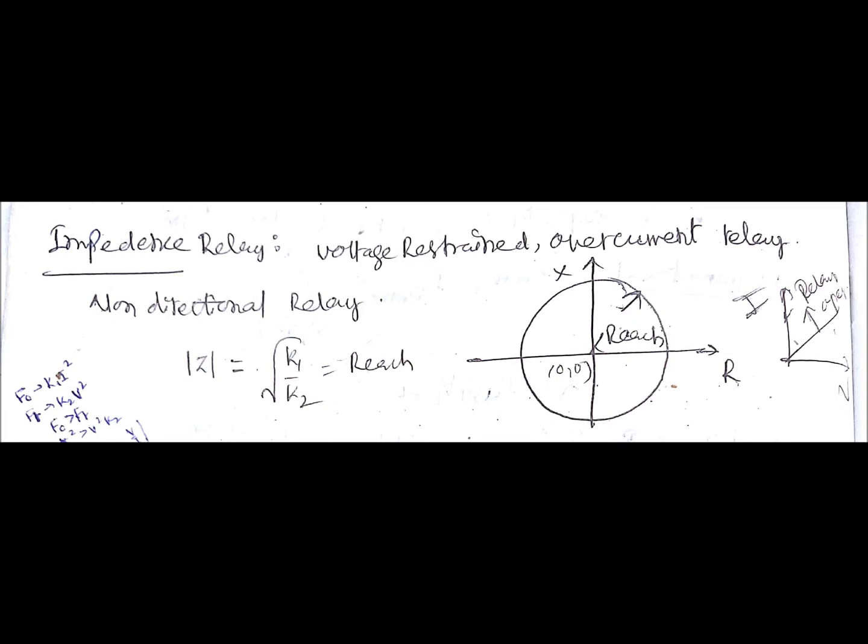The impedance magnitude is nothing but the square root of k1 by k2, where k1 and k2 come from the operating force and restraining force respectively. Since voltage is the restraining force, it gives k2·V², and current is the operating force giving k1·I². From the first statement itself you should be able to derive the formula for impedance, that is the reach — modulus of Z equals √(k1/k2).